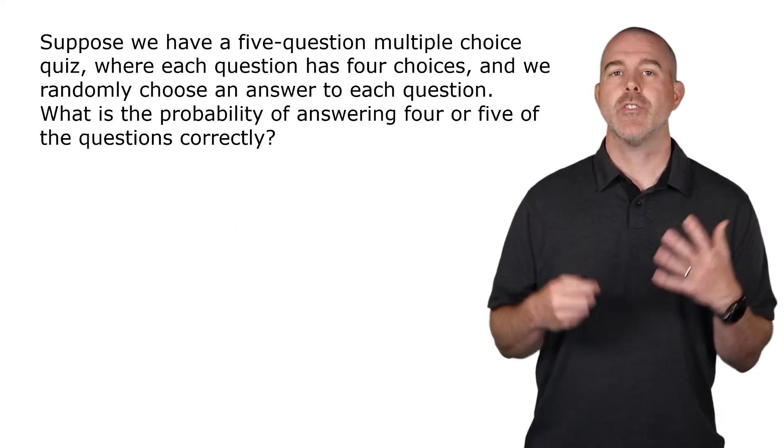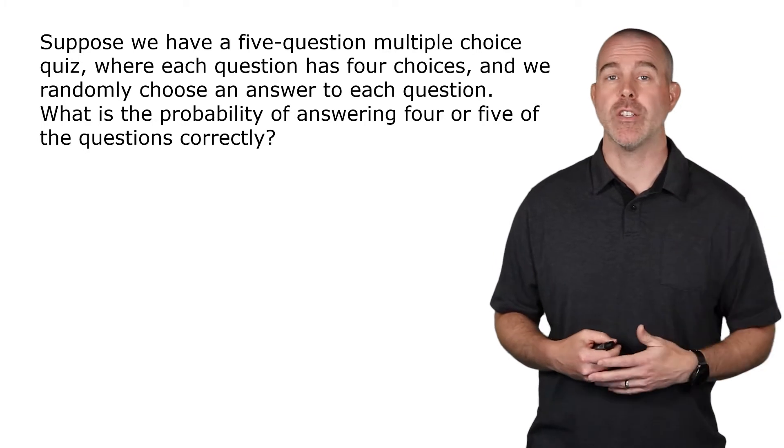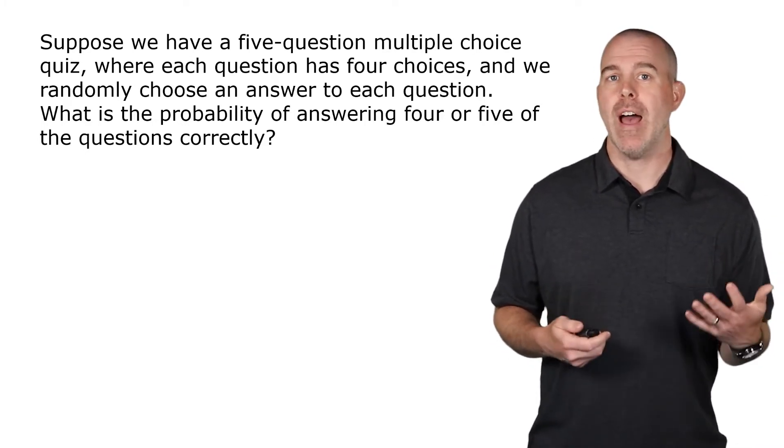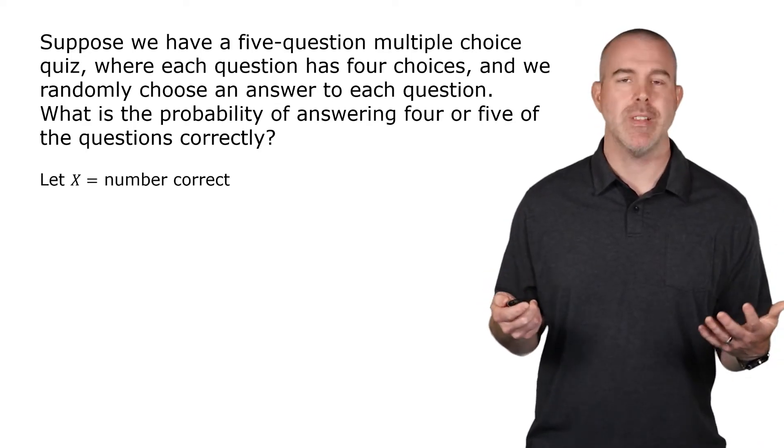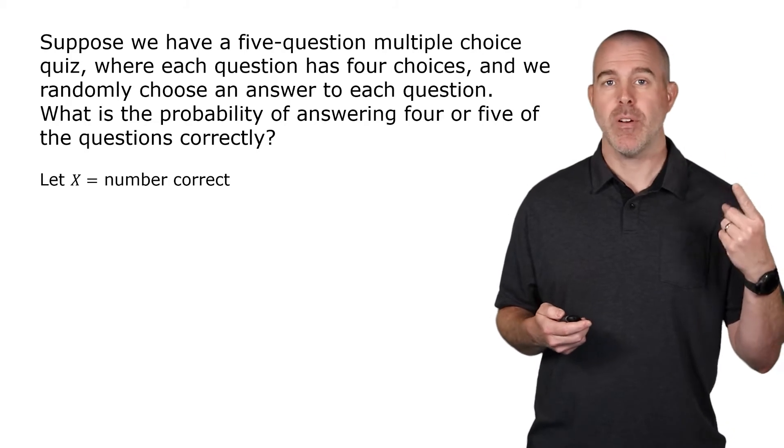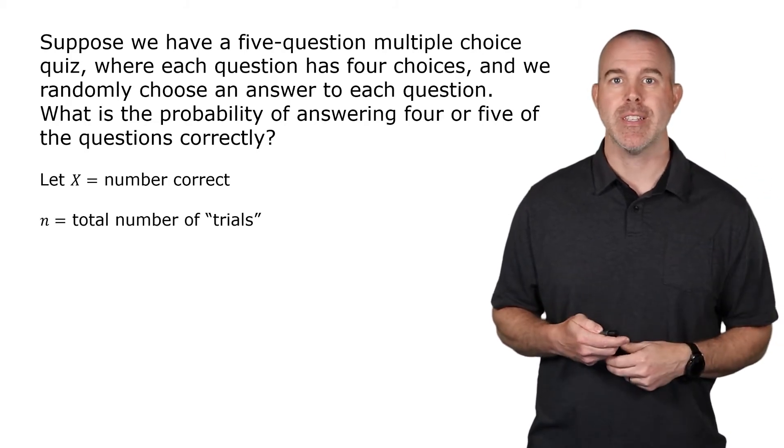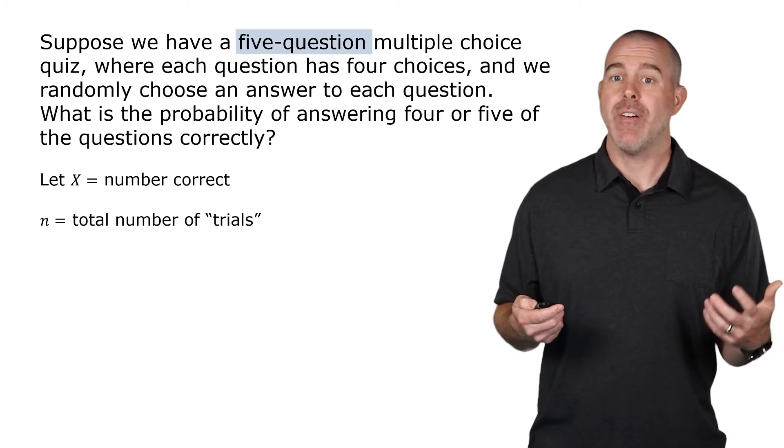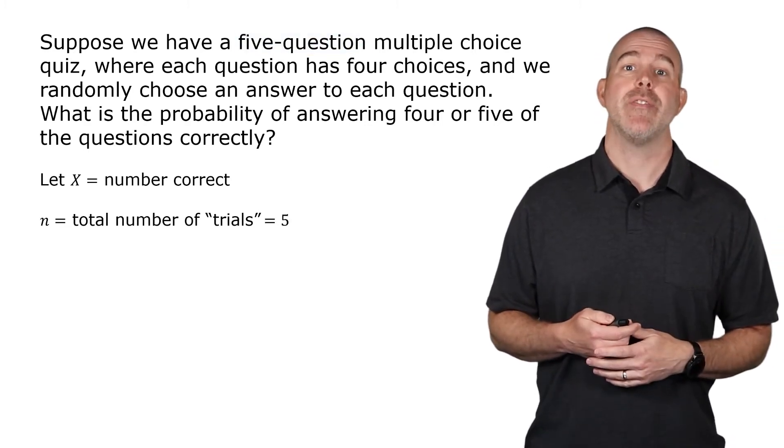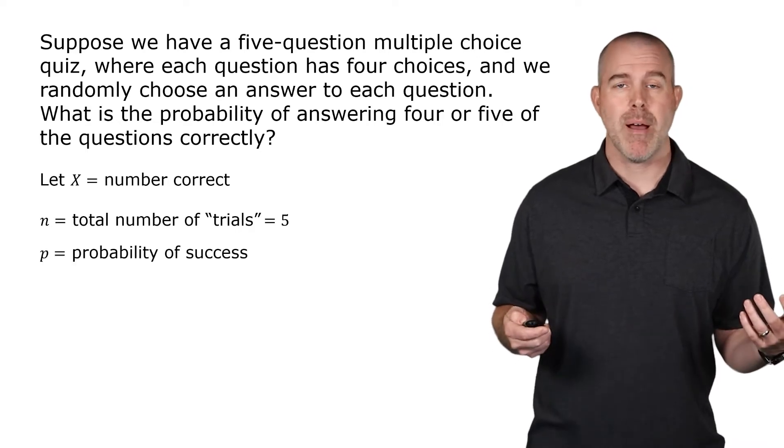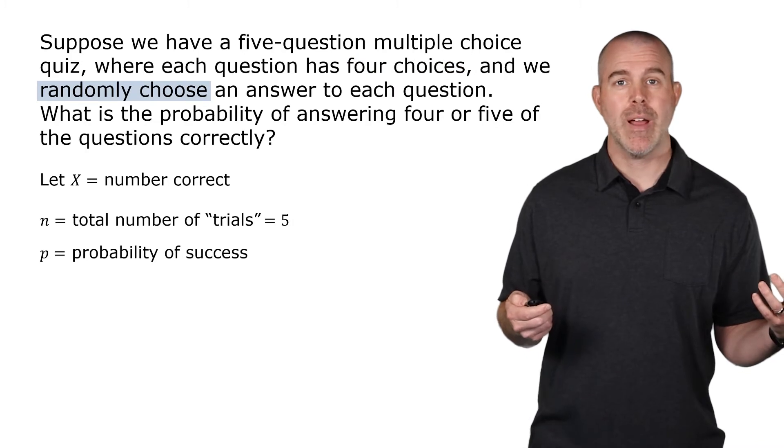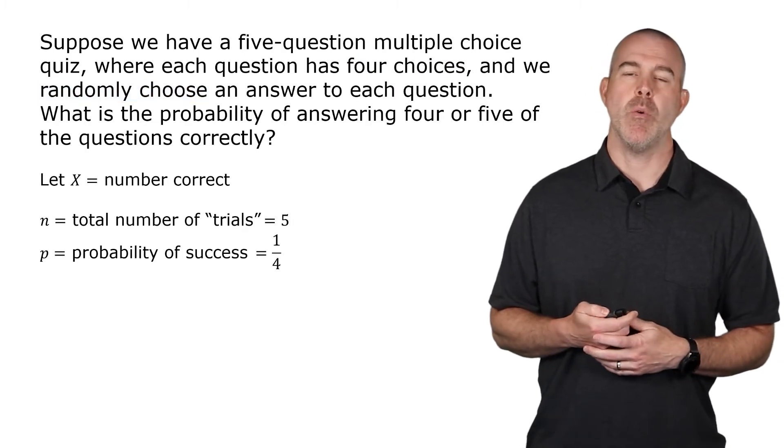All right, here's an example. Well, let's go back to the multiple choice, but now we'll have five questions. And let's find the probability of getting four or five correct. Well, we'll define a random variable. Let's let X be the number of correct. For binomial, we need an n, the number of trials, and p, the probability of success. Well, the number of trials here, I have a five-question multiple choice quiz, so n is five. P, the probability of success. Well, there are four choices. We're randomly picking the correct answer, so that probability would be one-fourth.